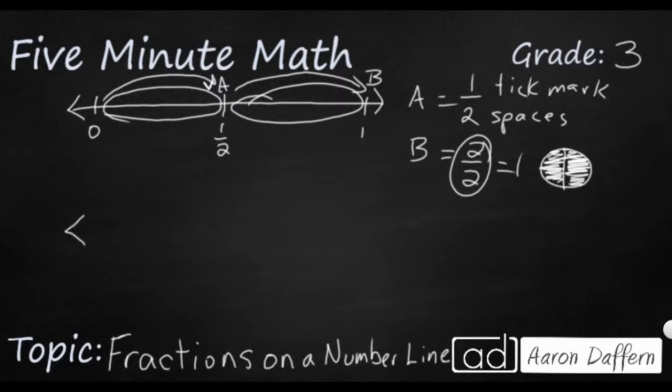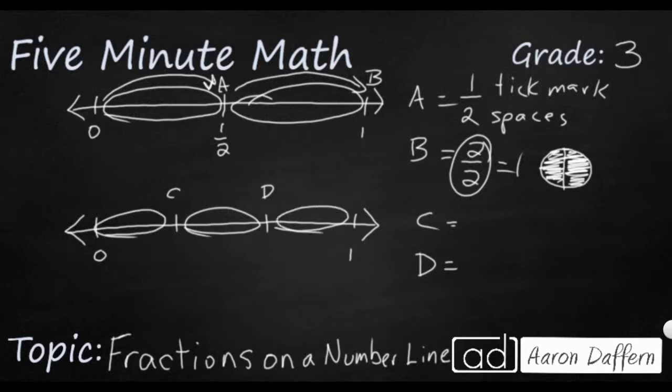And sometimes it's going to be a little bit trickier. And we're going to see this right here. There's my zero. There's my one. And then you're going to get something that looks kind of like this. So once again, let's go ahead and label these as C and D. And let's do our spaces and our tick marks, just to make sure. So we've got 1, 2, 3 spaces. So both of those are going to have a denominator of 3, because this is broken up into thirds.